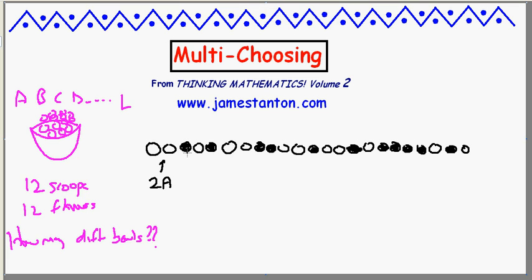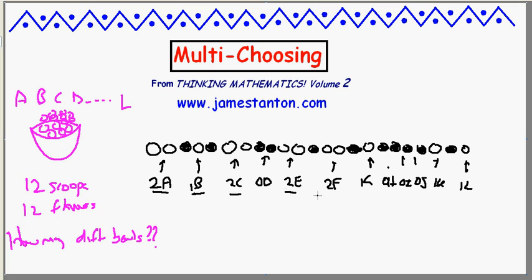So think of the 11 black dots, each of the black dots, as spaces between flavors. And I'm going to read this diagram of black and white dots as follows. The first two white dots represents two scoops of flavor A. Then we have a spacer, followed by one scoop of B, spacer, two scoops of C, followed by spacer with no scoops of D, spacer, two of E, spacer, two of F, spacer, one of G, then no H's, no I's, then no J's, then one K, spacer, followed by one L. So there is a particular set of 12 scoops of ice cream amongst those 12 flavors.